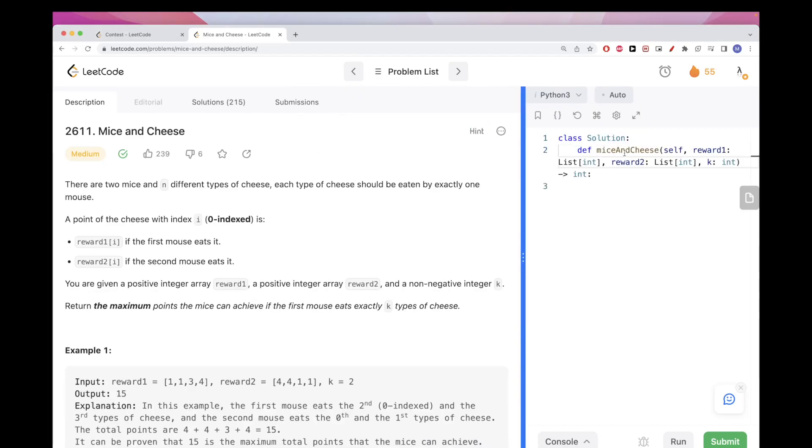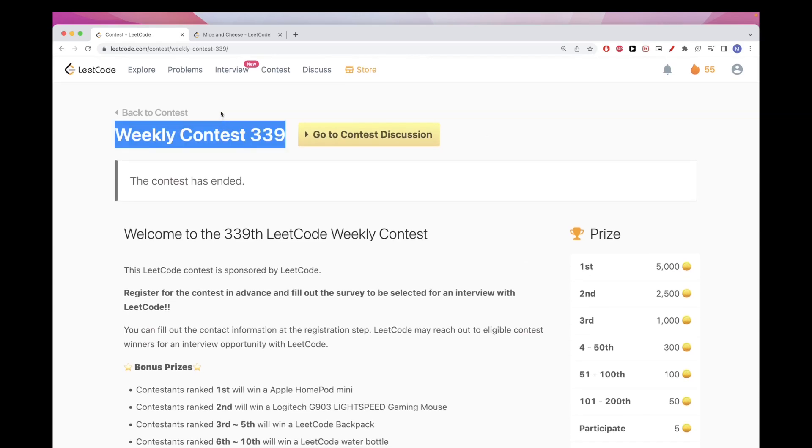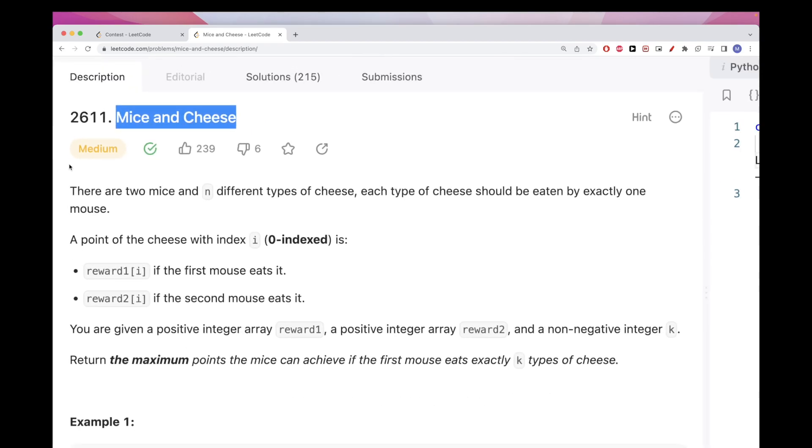Hello, so today we are going to do this problem, which is part of LeetCode Weekly Contest 339, this week's contest. The third problem is Mice and Cheese. The problem says we have two mice and we have N different types of cheese, and each type of cheese should be eaten by exactly one mouse only.